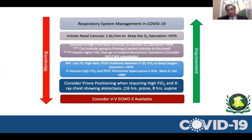Once on the ventilator, when the PF ratio is less than 150, consider proning the patient: 16 hours prone and 8 hours supine. If that is not working, consider VV ECMO if available. Many of these patients have microthromboemboli in the pulmonary vessels. If D-dimer is five times the normal value, start anticoagulation with a heparin drip on a weight-based protocol, or enoxaparin at full dose, to help with microthromboli. If pulmonary hypertension develops, inhaled nitric oxide or prostacycline (Flolan) can be of value.